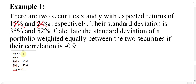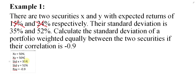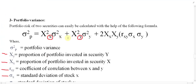If it says weighted equally, it means 50% is invested in X and 50% is invested in Y. In other examples it might say 20% in X and 80% in Y, or 'a quarter of the investment is in X' meaning 25% in X and 75% in Y. Now that all information is identified, we can calculate the standard deviation using the formula.